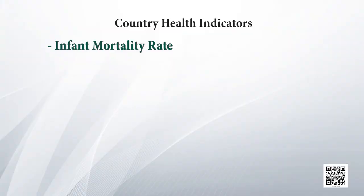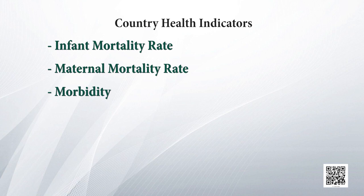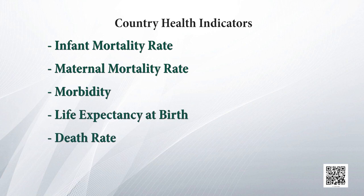Health status in a country is indicated by many indicators like infant mortality rate, maternal mortality rate, morbidity, life expectancy at birth, death rate, etc. Now let's talk about the three-tier system under which our economy's health infrastructure is classified.